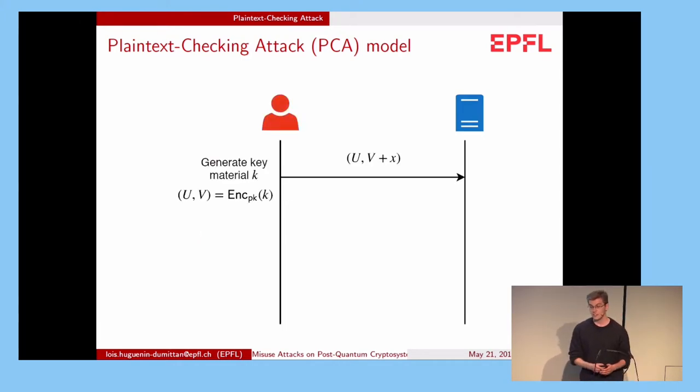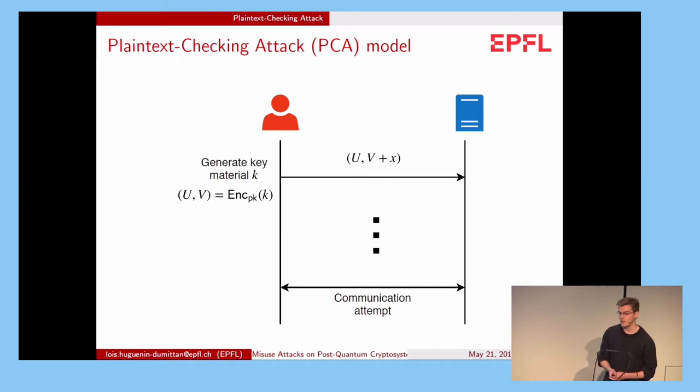Now if the client is malicious, instead of sending U and V, he can try to send U and V plus some value X to the server. And after some steps they will try to communicate. But if the communication attempt is not successful, it means that the decryption on the server side didn't give the right result. It didn't decrypt the key material K. So that's what we call the plaintext checking attack.